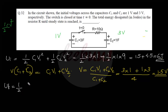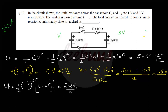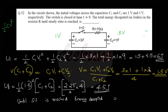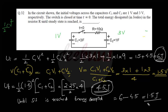The final energy stored in the capacitors is (1/2)·(C1 plus C2)·V_final² equals (1/2)(4)(1.5²) equals (1/2)(4)(2.25) equals 4.5 joules. The energy dissipated in the resistor until steady state is 6 minus 4.5 equals 1.5 joules.